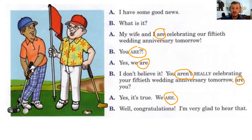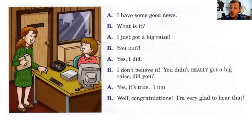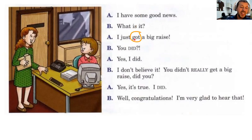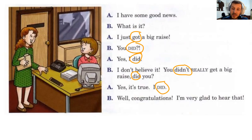This time you have the good news. You begin — go! [pause] What is it? You did! I don't believe it — you didn't really get a big raise, did you? Well, congratulations, I'm very glad to hear that. The verb in this dialogue is 'got' — got a big raise. Now 'got' becomes 'did': each time we refer to the action of getting a raise, we use 'did.'